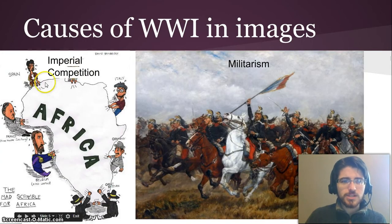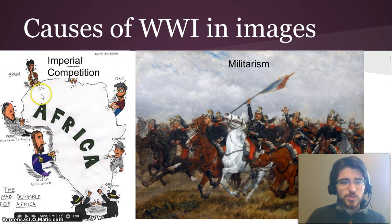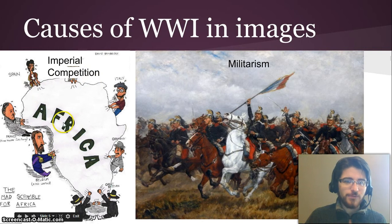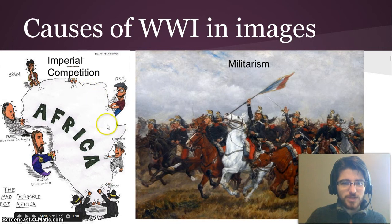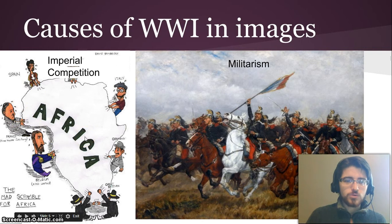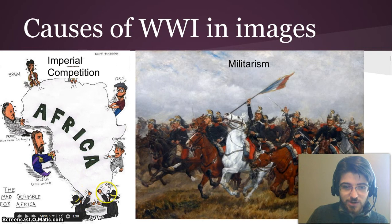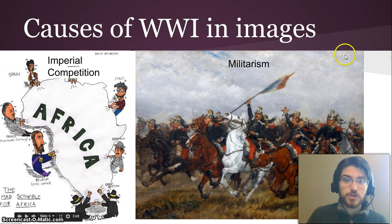Imperial competition is the next cause. In this image, different representations of European countries are literally pulling on a big map of Africa as they attempt to set up colonies. Great Britain, Italy, Germany, Holland, Belgium, France, and Spain are all trying to get colonies. Because they're all competing for the same space — you can see the British and the Dutch pulling on the same areas — it caused a lot of conflict and friction between countries.